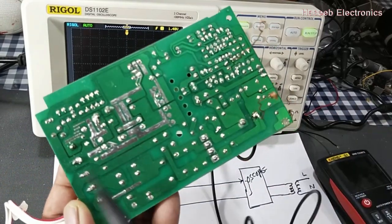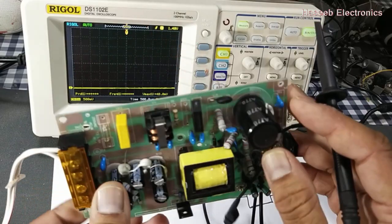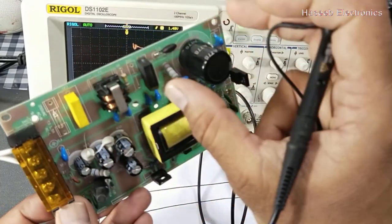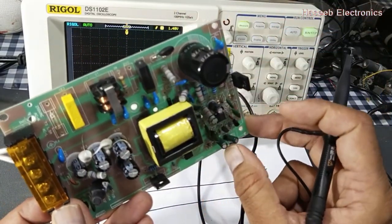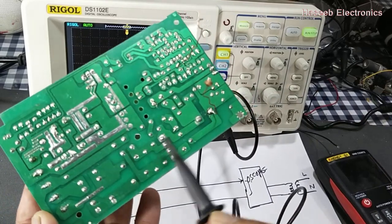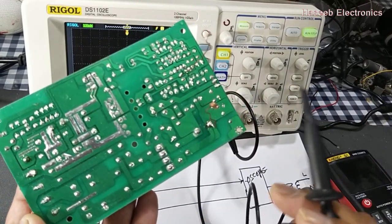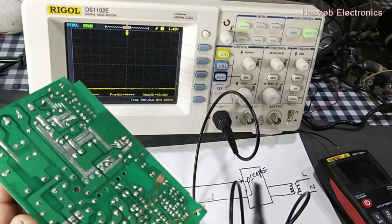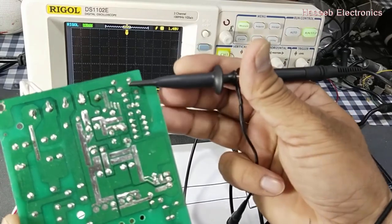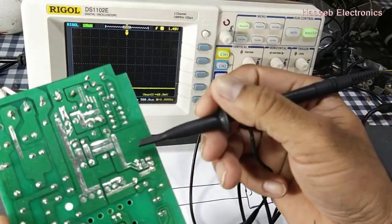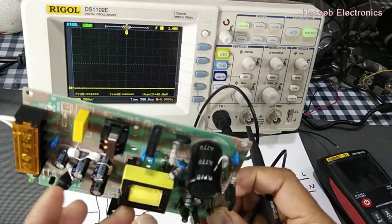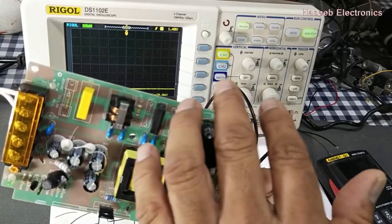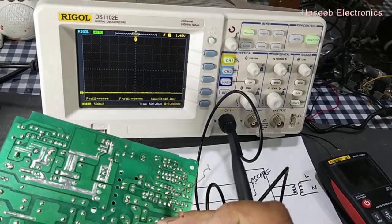If we see, it is supplied with direct line and neutral. So this portion from this area up to the SMPS transformer is directly exposed to line voltage. Testing here will need special care for human safety and test equipment safety. In the secondary side after the transformer, we have isolation.